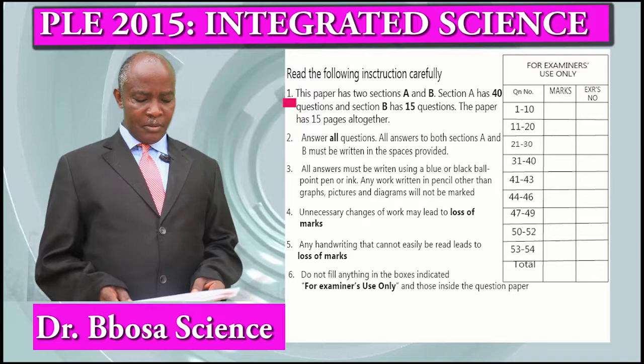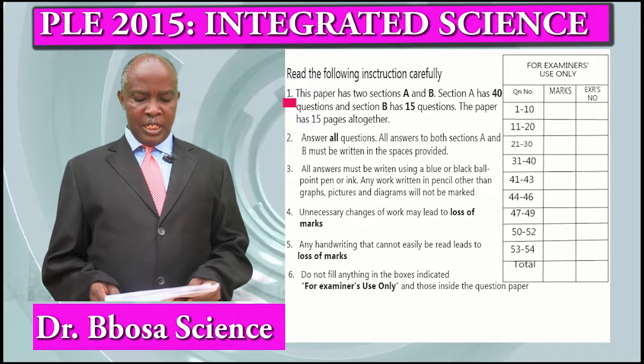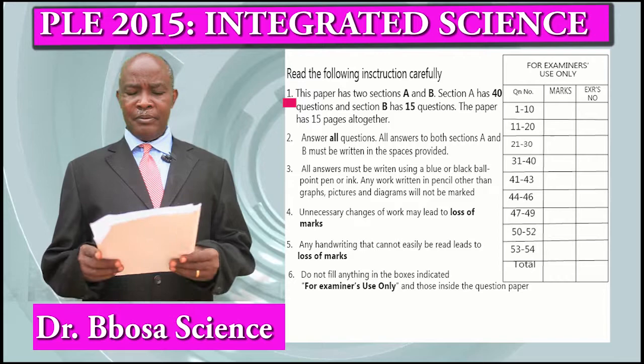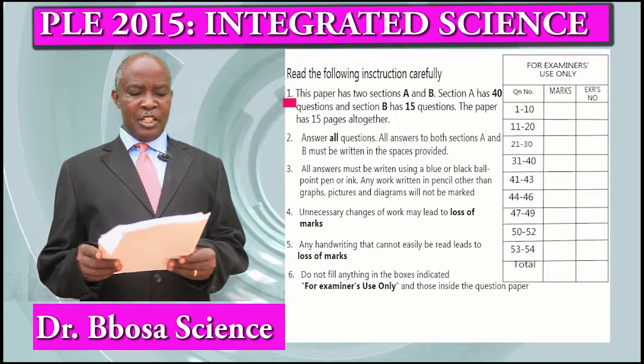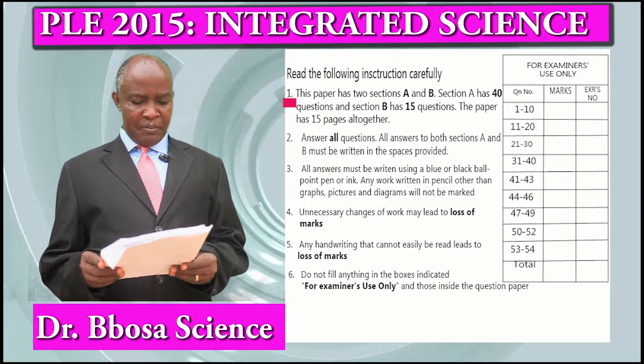Read the following instructions carefully. The paper has two sections, A and B. Section A has 40 questions. Section B has 15 questions. The paper has 15 pages altogether. If your paper has less than 15 pages, then it is not the right paper.